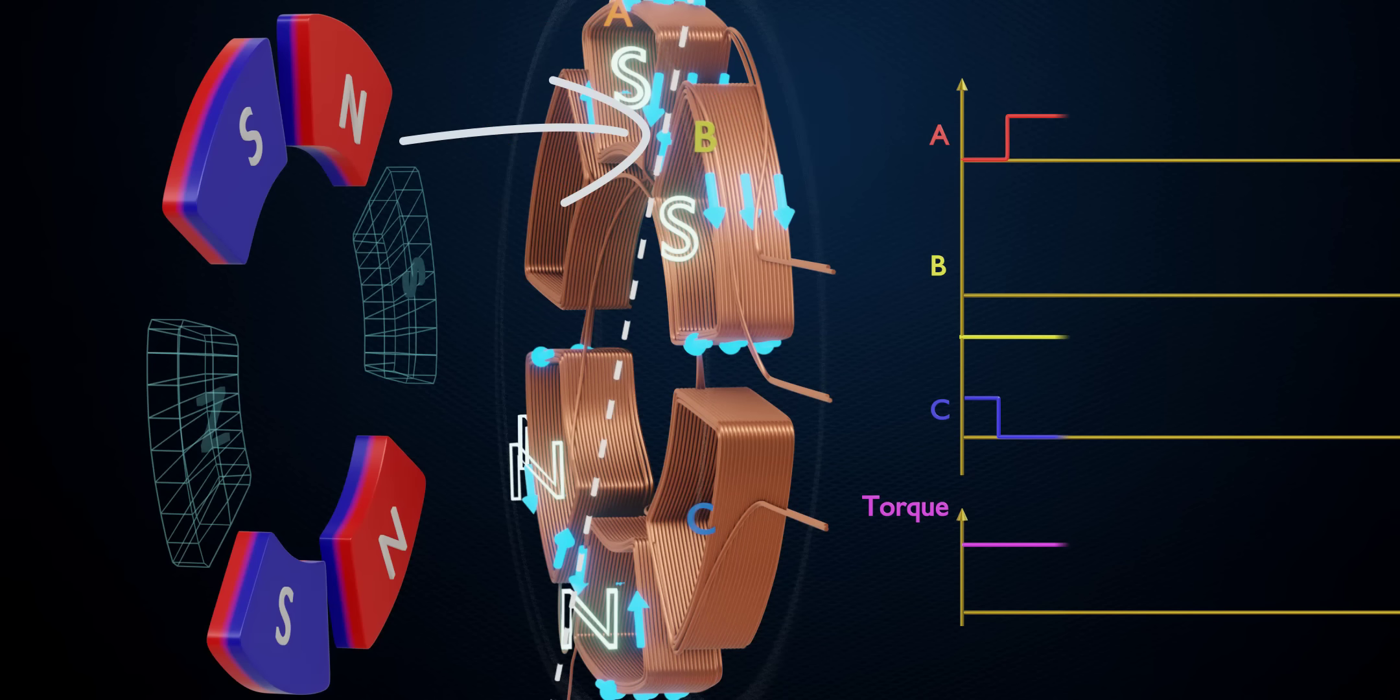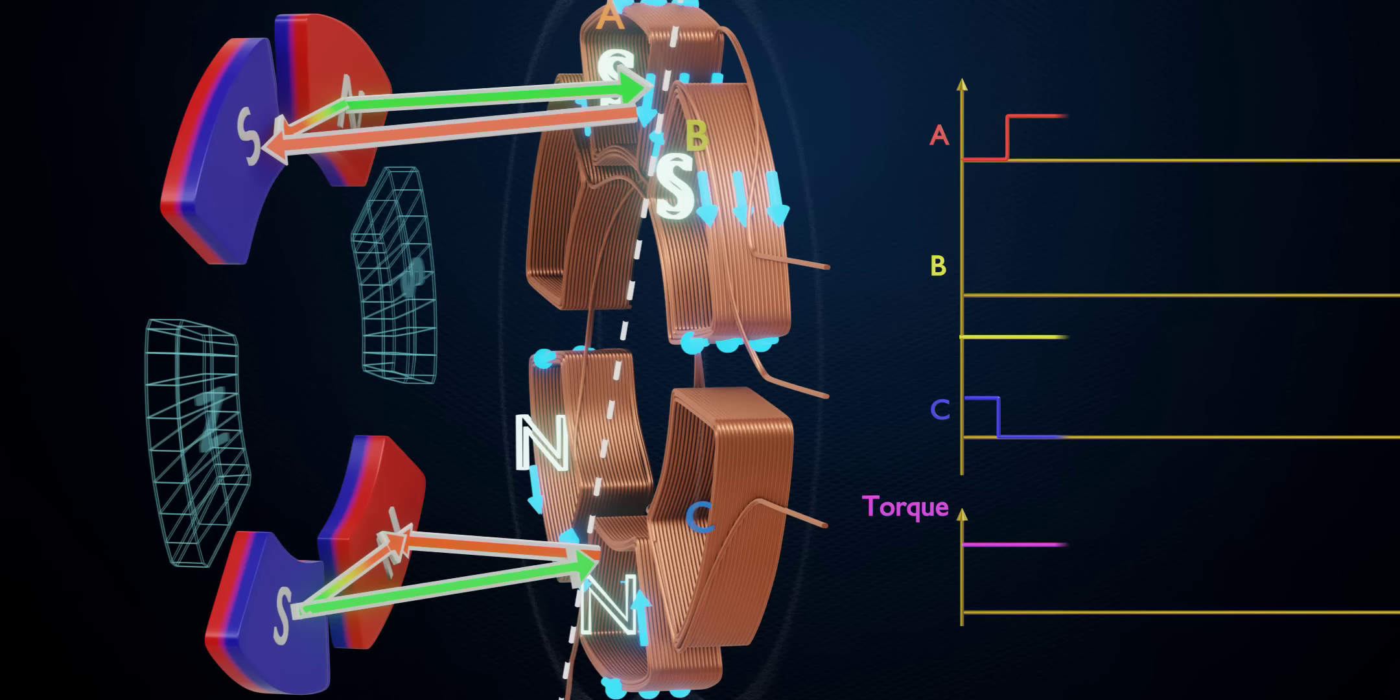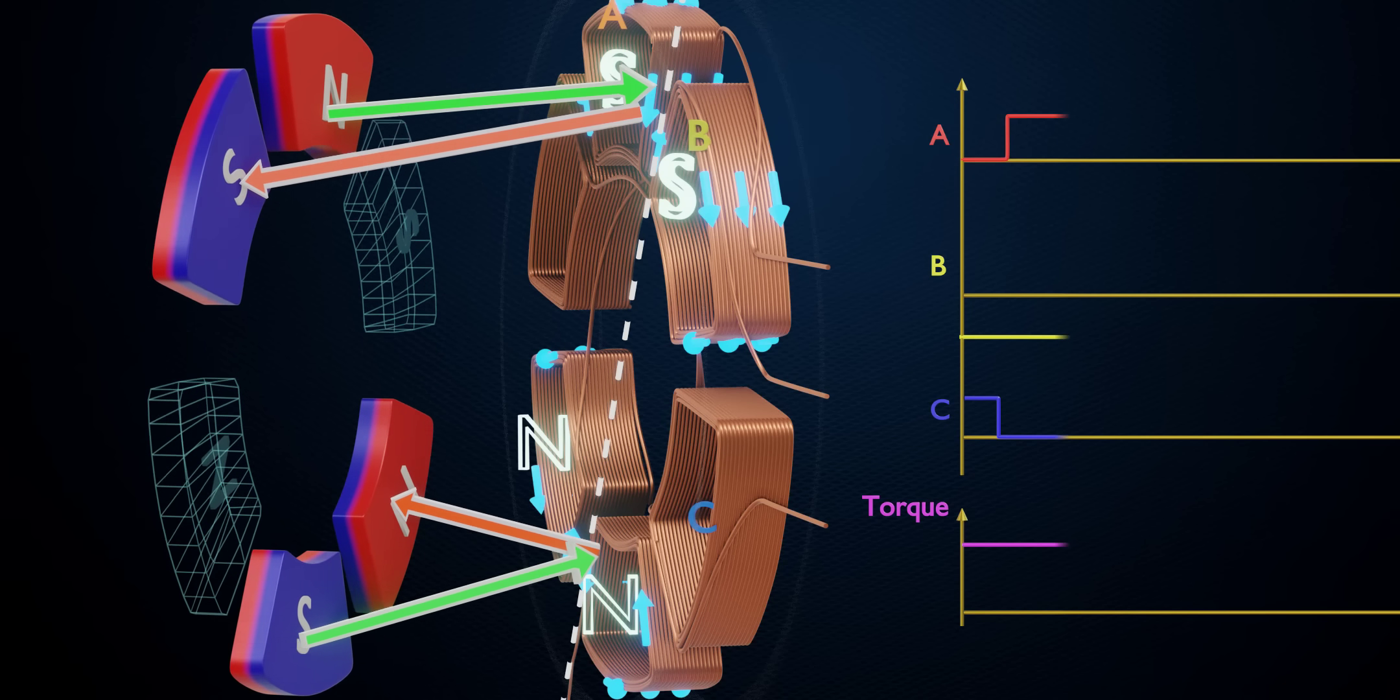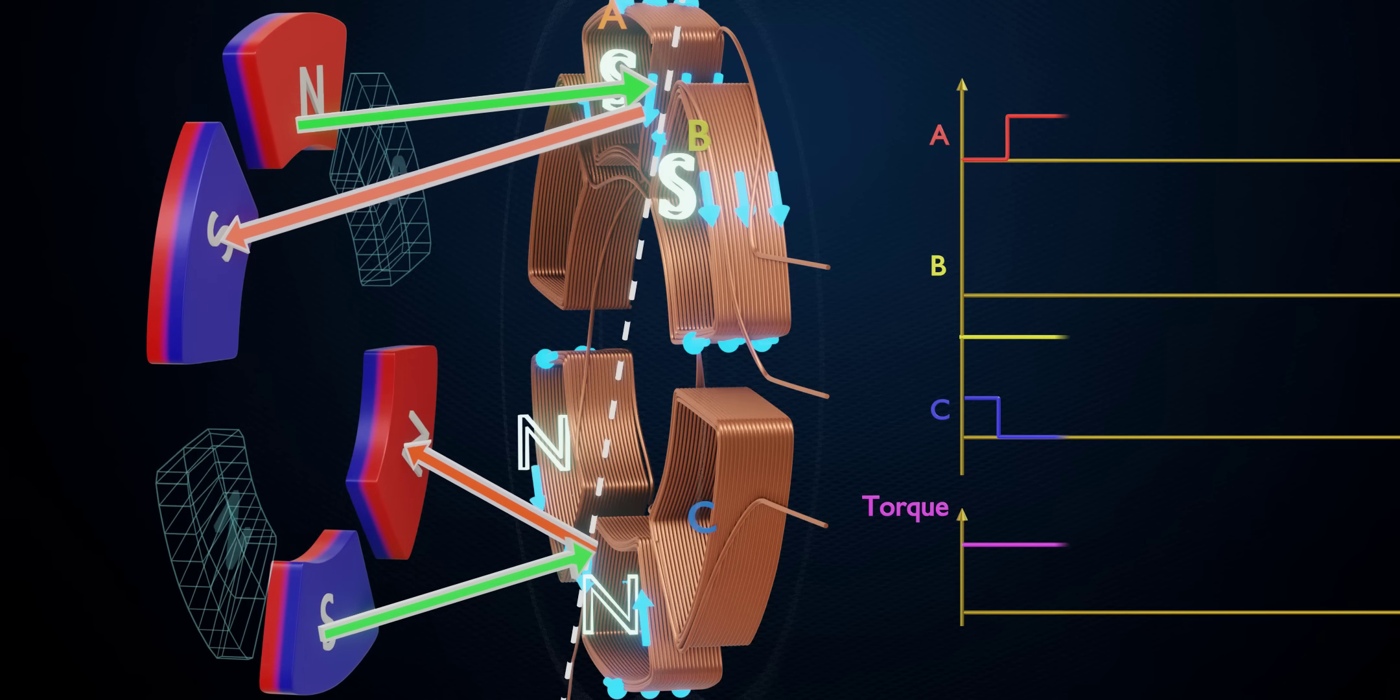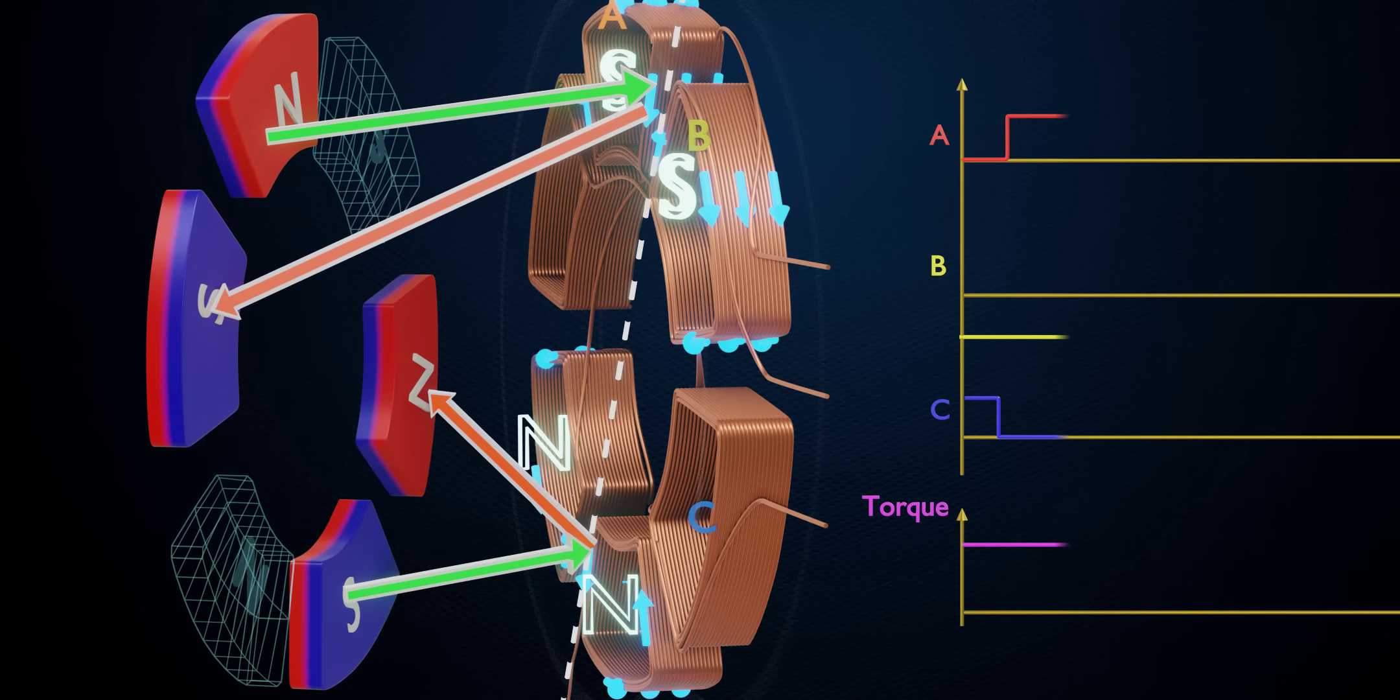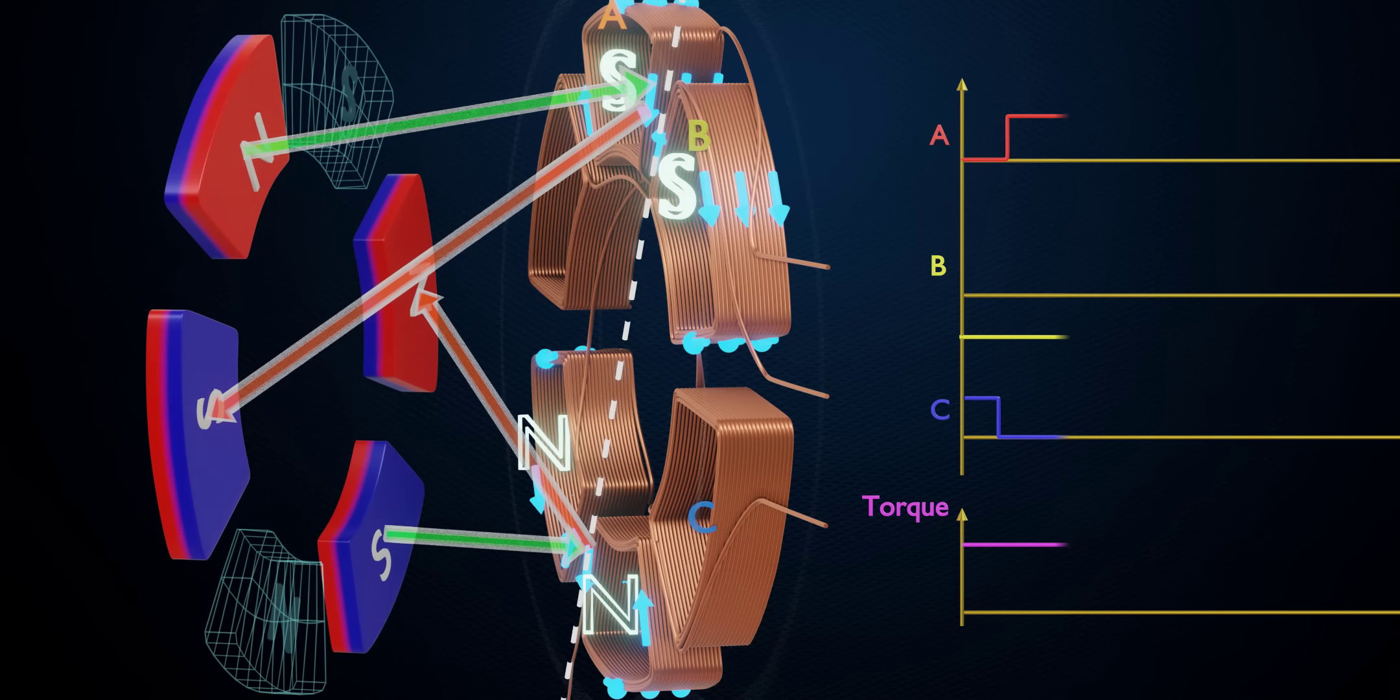Here again, a net tangential force is developed. The combined effect produces more torque and power output from the rotor. Interestingly, this process also ensures that the motor has a constant torque output.